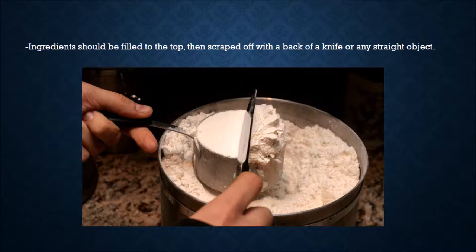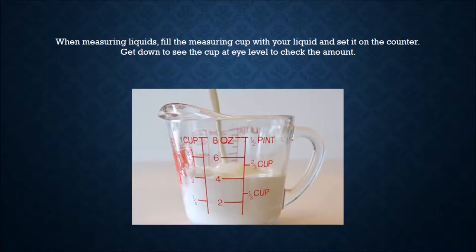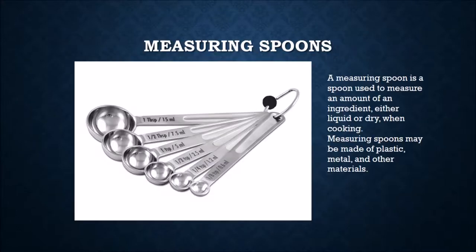Liquid measuring cups are used specifically for measuring liquids. Liquid is poured into the cup up to the appropriate marker on the side. Clear plastic or glass measuring cups are easiest to use so you can see the measurements on the side. When measuring liquids, fill the measuring cup, set it on the counter, and get down to see the cup at eye level to check the amount.